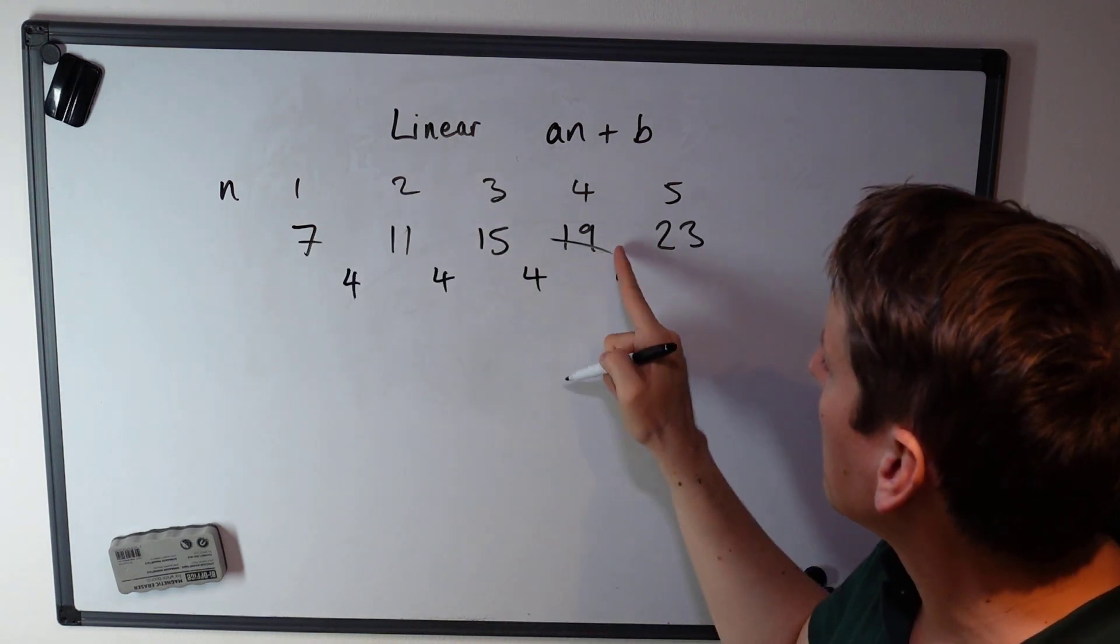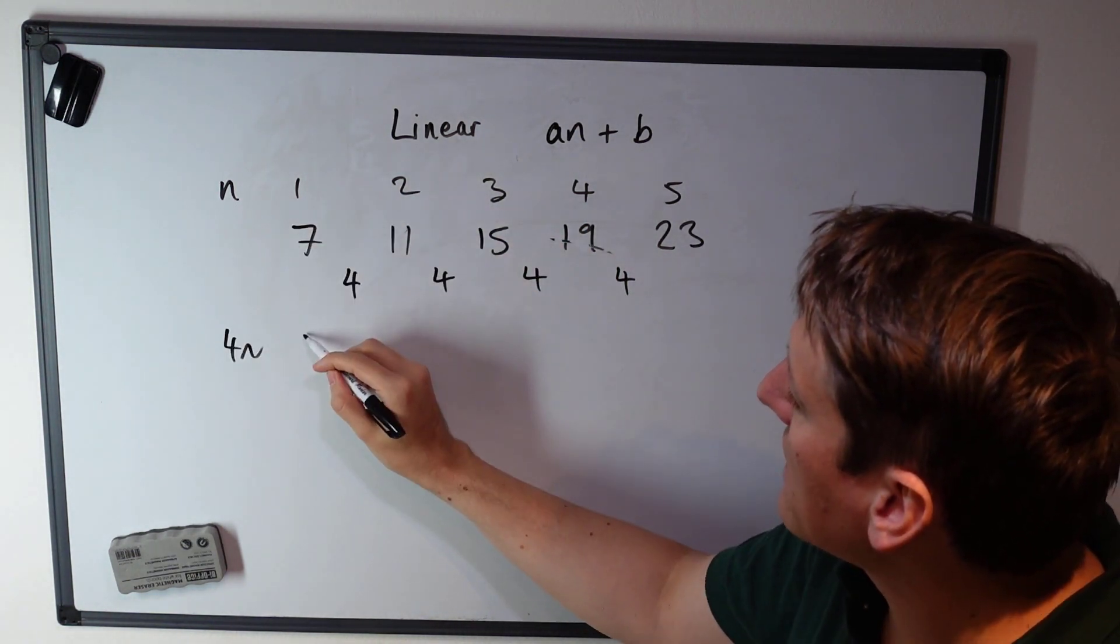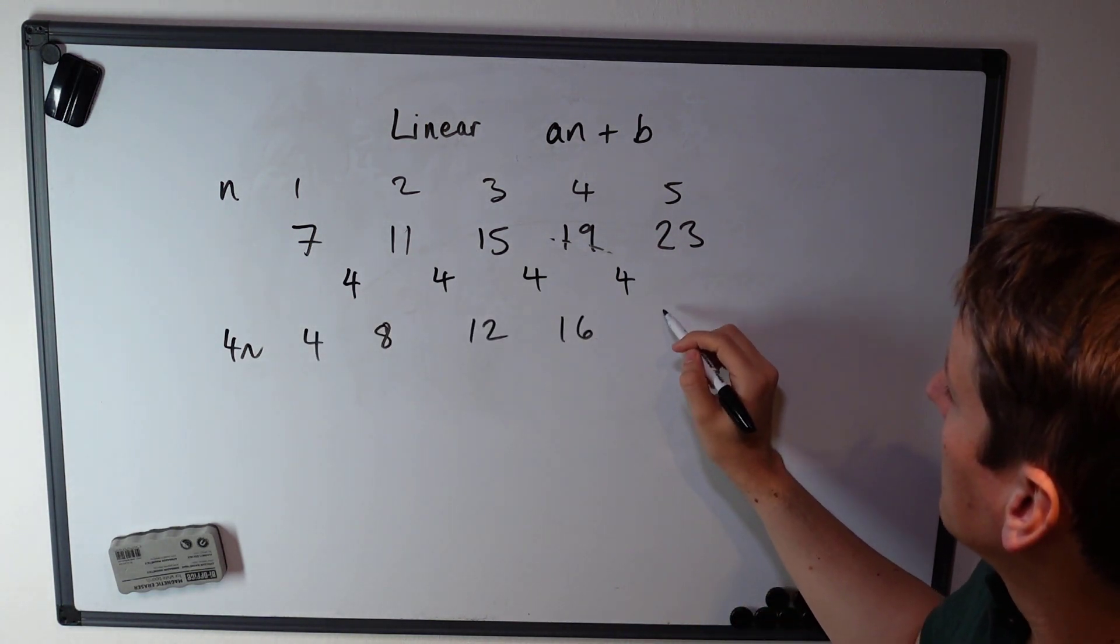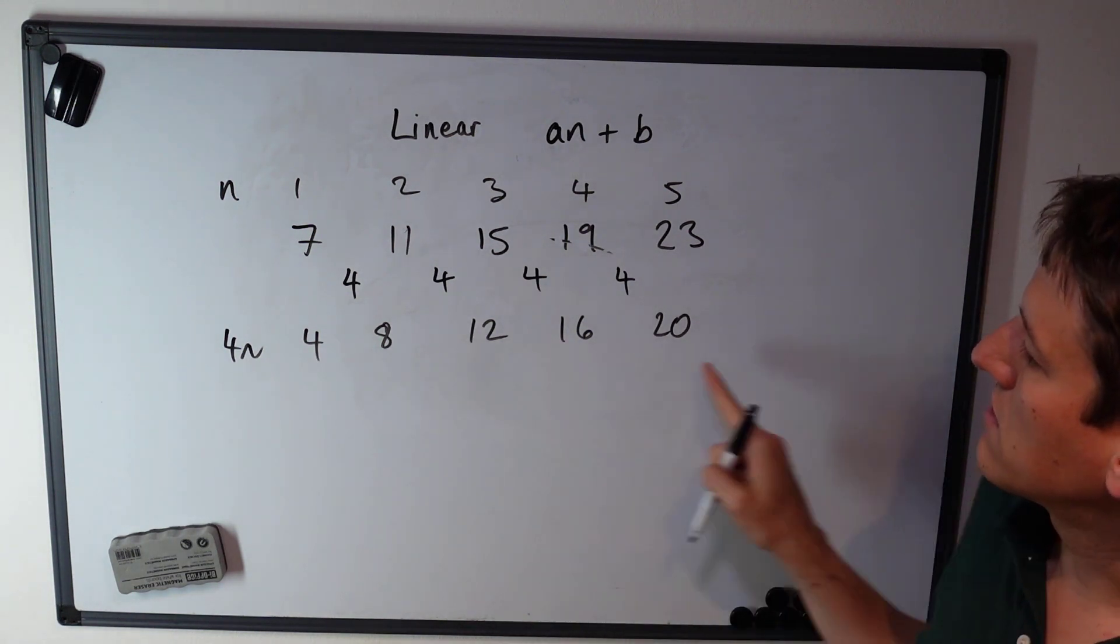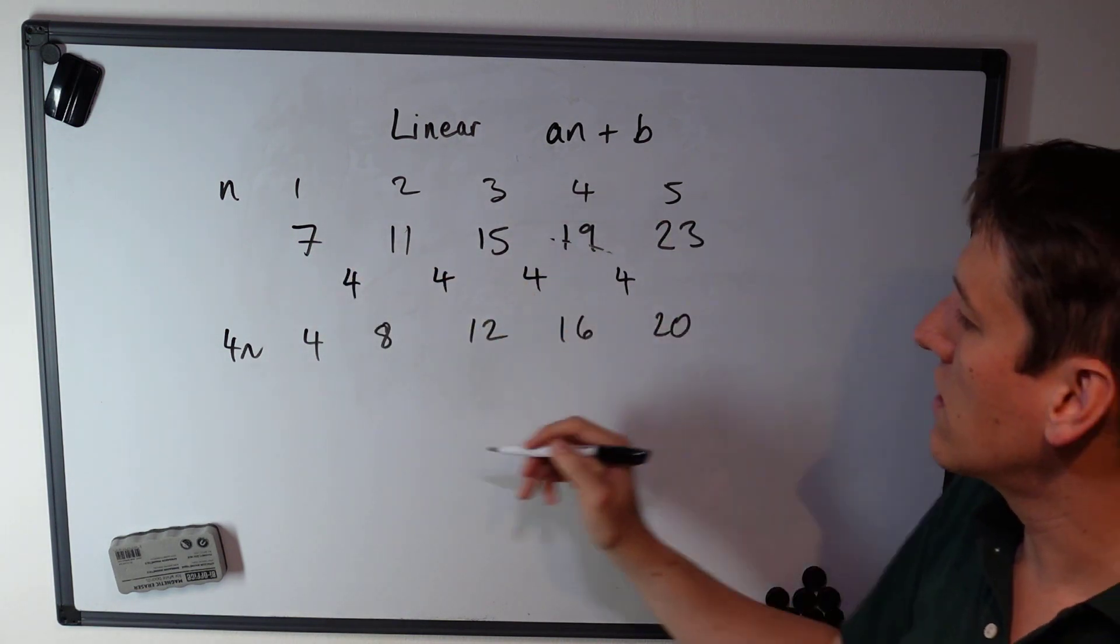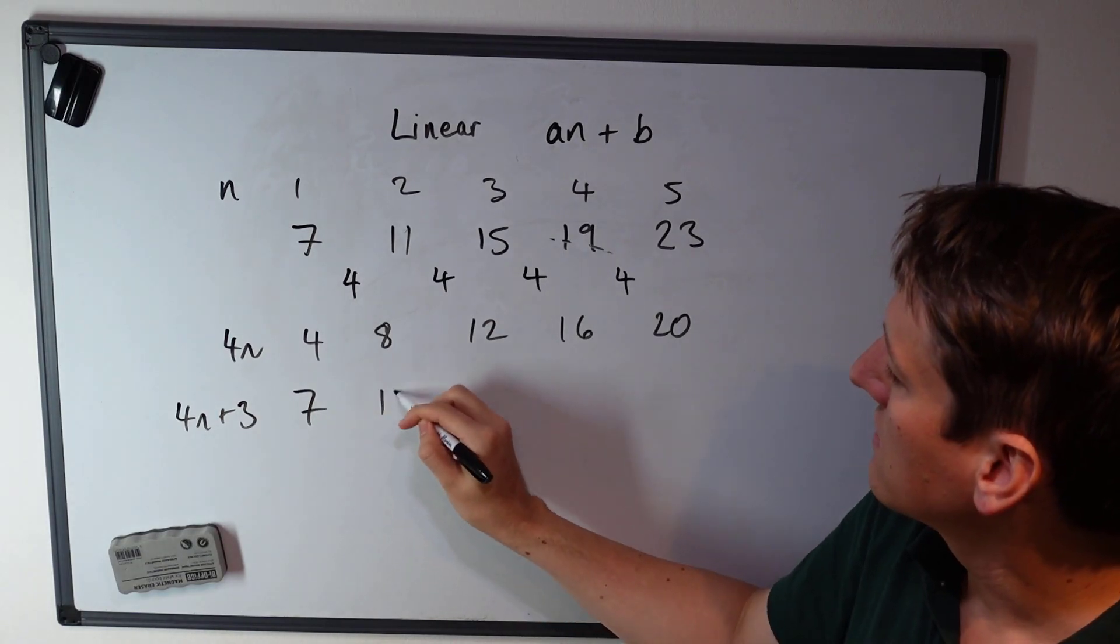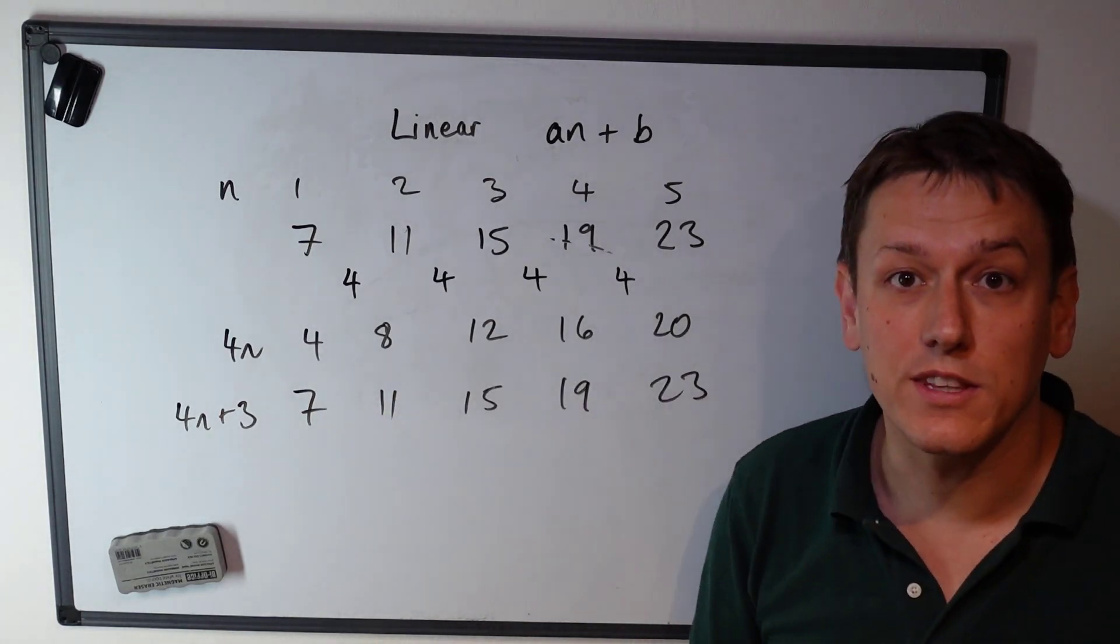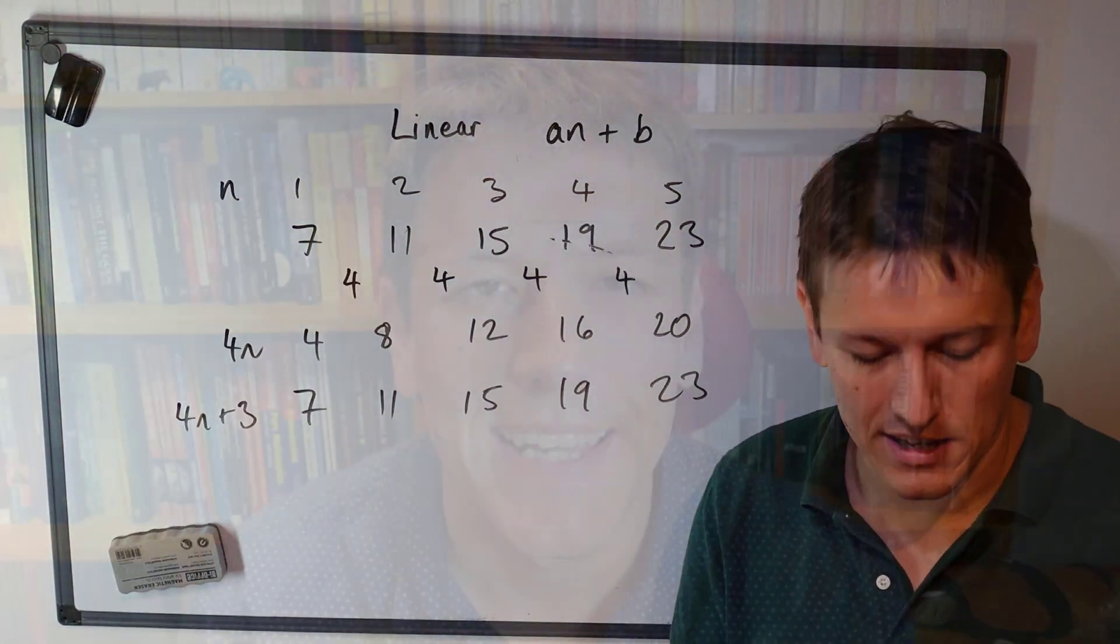This sequence is going to be related to the sequence 4 times n, which is 4, 8, 12, 16, 20. And then we see that to go from this sequence to the original sequence, we just add 3 to each term, so the sequence 4n plus 3 is exactly the sequence we started with. And so we can work out the nth term of any linear sequence in that way.